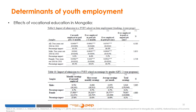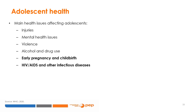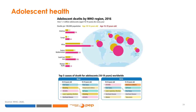In the next section, we will analyze different dimensions of adolescents' health and recent research on policies that can improve it. The main health issues affecting adolescents worldwide are injuries, mental health issues, violence both within and outside the household, alcohol and drug use, early pregnancy and childbirth, and HIV/AIDS and other infectious diseases. More than one million adolescents die each year. The highest death rates are in Africa, Eastern Mediterranean countries, and South and East Asia. The leading causes of death among adolescent boys were road injury, interpersonal violence, self-harm, drowning, HIV-AIDS, respiratory infections, and diarrheal diseases.